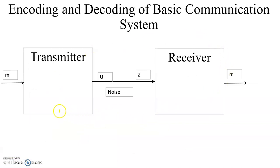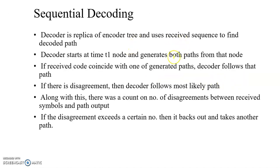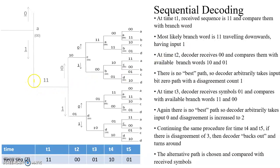This is the basic block diagram of the communication system — the transmitter and receiver. We gave some input, got some output U, and send that output signal to the receiver as the received signal. We have to find the original sequence back. This is the sequential decoding of the code tree. The received sequence Z is 1,1,0,0,0,1,1,0,0,1. This is not the same as the transmitted output signal — there are some errors. We compare the received sequence with the output. The output 1,1 matches with the received 1,1, so we travel in this direction.